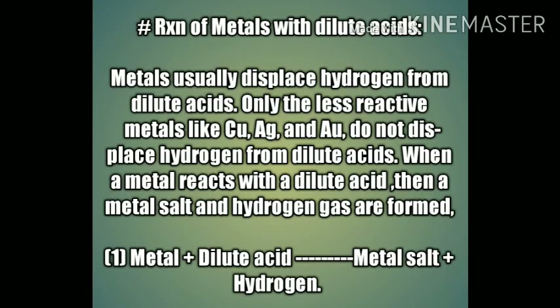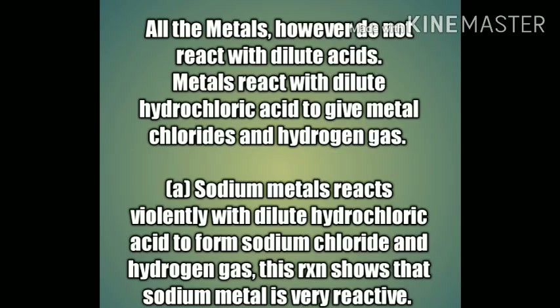The third reaction is the reaction of metals with dilute acid. Metals displace hydrogen from dilute acid. Less reactive metals like copper, silver, and gold do not displace hydrogen from dilute acid because they are less reactive. When metals react with dilute acid, a metal salt and hydrogen gas are formed. Only highly reactive metals react with dilute acid; sodium is one such highly reactive metal, and when it reacts with dilute HCl, it forms sodium chloride and hydrogen gas.